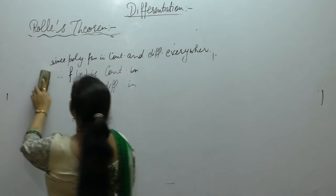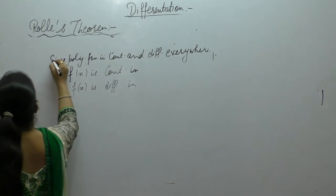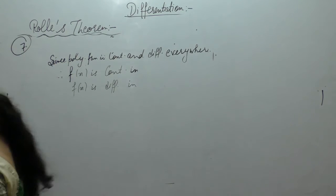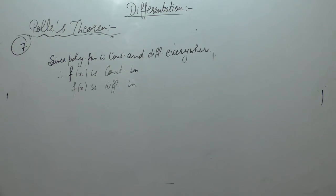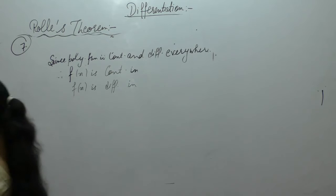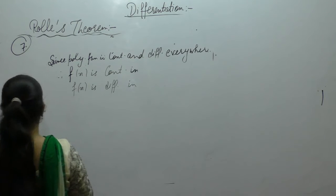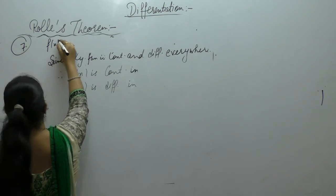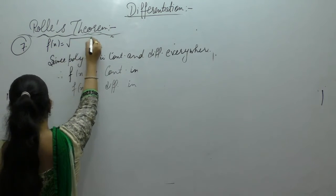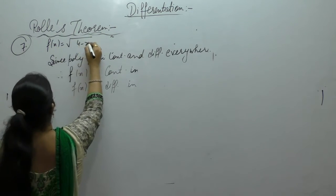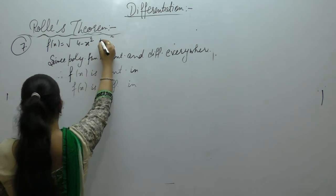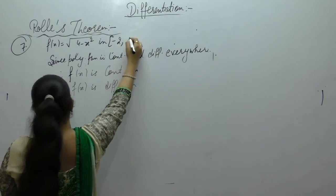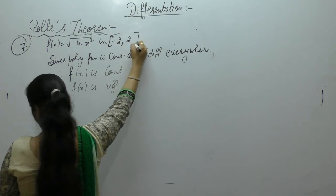Next question, Question 7: Verify Rolle's theorem for f(x) = √(4-x²) on [-2, 2].